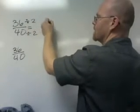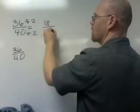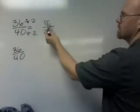So 36 divided by 2 is 18, 40 divided by 2 is 20. Well, both of these numbers, 18 and 20, are even, so we know we can reduce again.